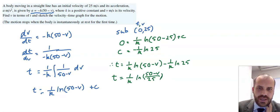Jumping through some steps here, when we rearrange that, it'll be v equals 50 minus 25 e to the kt. And now, we have our function. Now, the original question wanted us to sketch.